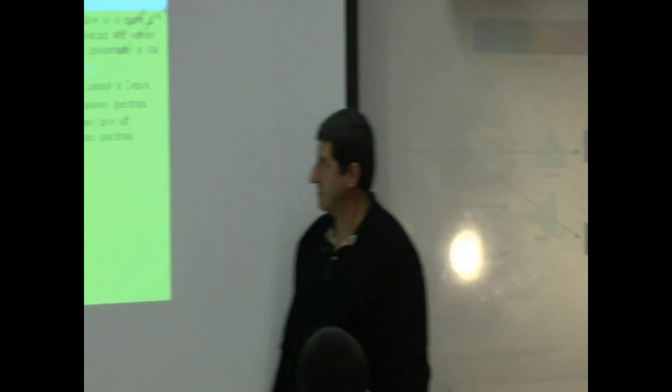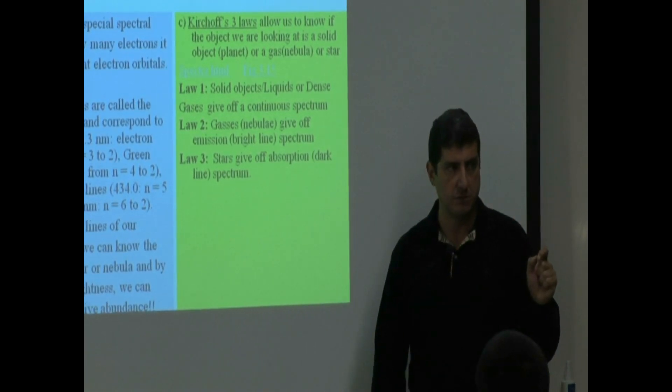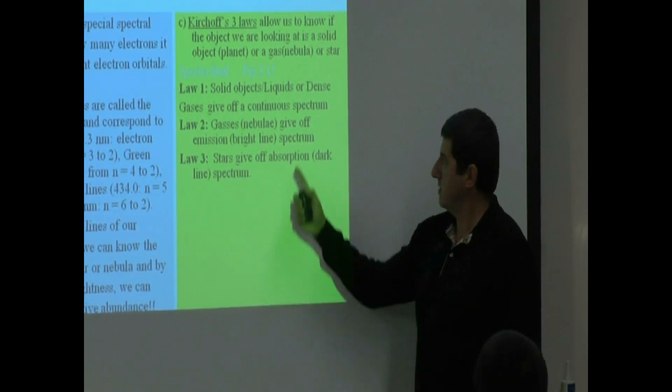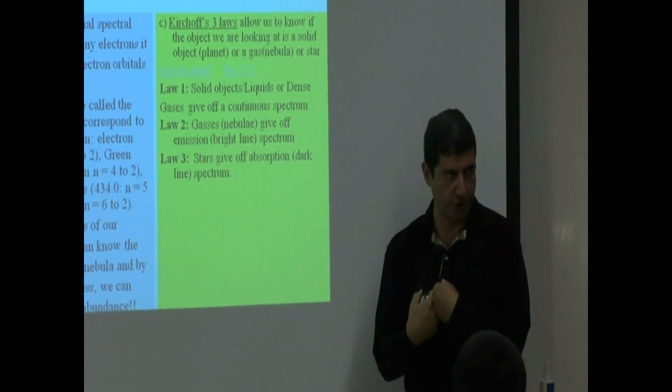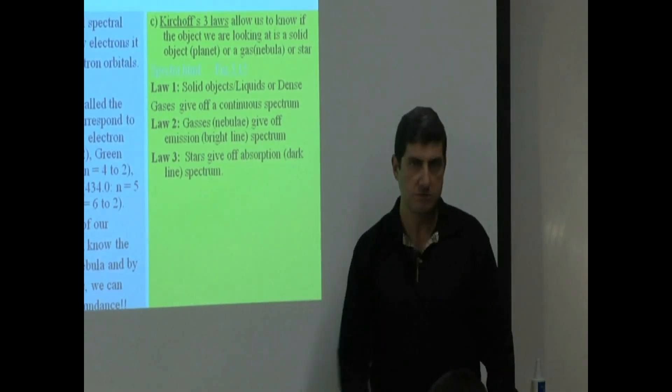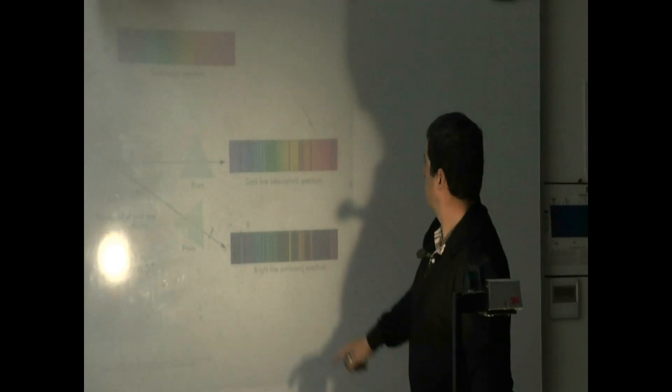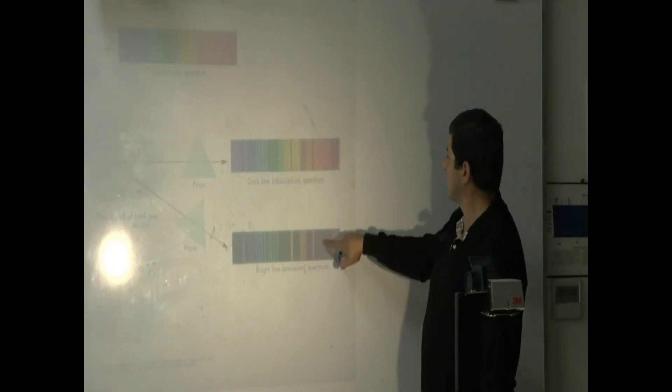Now, law number three. Stars give off opposite of that. Opposite of emission is absorption. Opposite of bright is what? Dark. So look at here. You see here? Let's see if you can tell what's the difference between this and this.